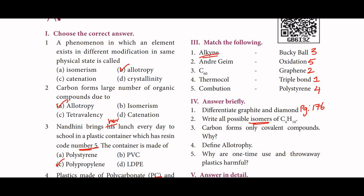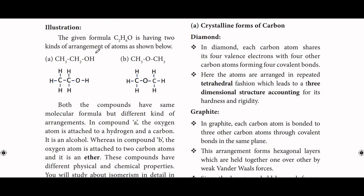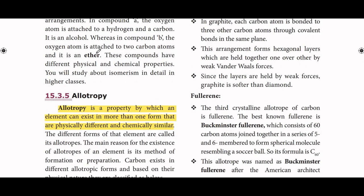Define allotropy. The answer is on page number 176. Allotropy is a property by which an element can exist in more than one form that are physically different and chemically similar. That is the definition of allotropy.